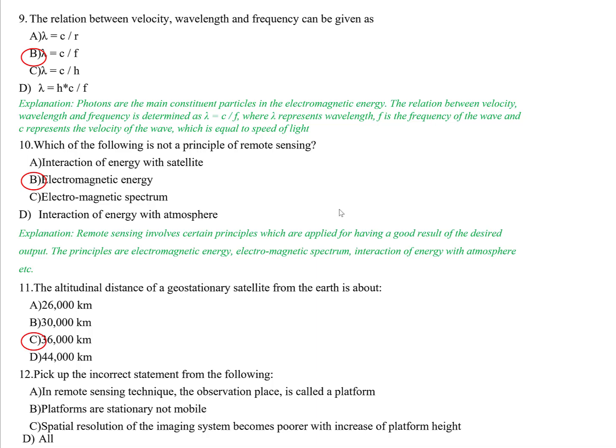Question twelve: Pick the incorrect statement from the following. Option A — the observation place in remote sensing is called a platform — is true. Option B — platforms are stationary, not mobile — is the incorrect statement. Option C — spatial resolution of an imaging system becomes poorer with increased platform height — is true. The correct answer is B, because platforms may be stationary or mobile, such as aeroplanes.